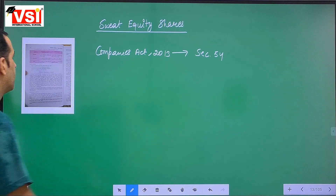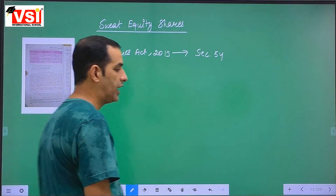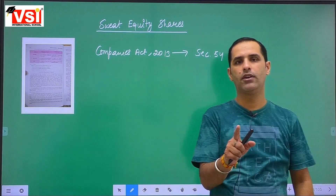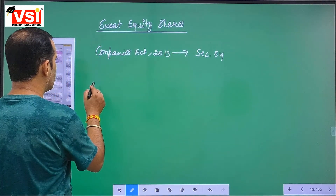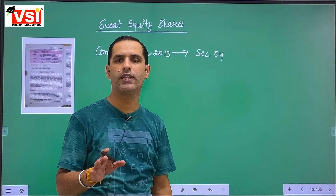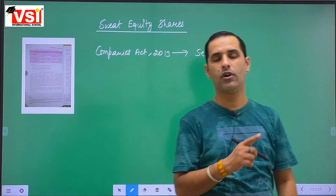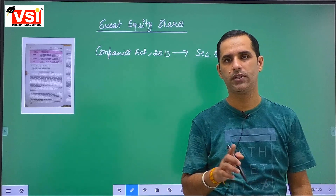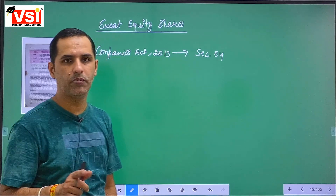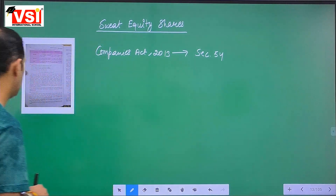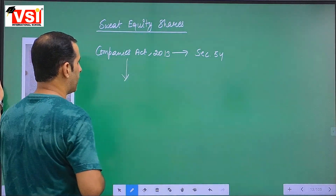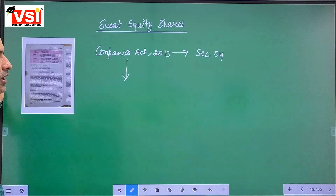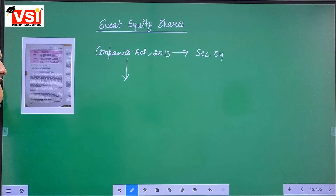Just as we studied in private placement — from the date of allotment the allottee cannot sell their holding for a period of three years — in the same way, sweat equity shares also cannot be sold by the employees or directors of the company from the date of allotment within a period of three years. This time period is called the lock-in period. Can sweat equity shares be issued below their nominal or face value? Answer is yes.